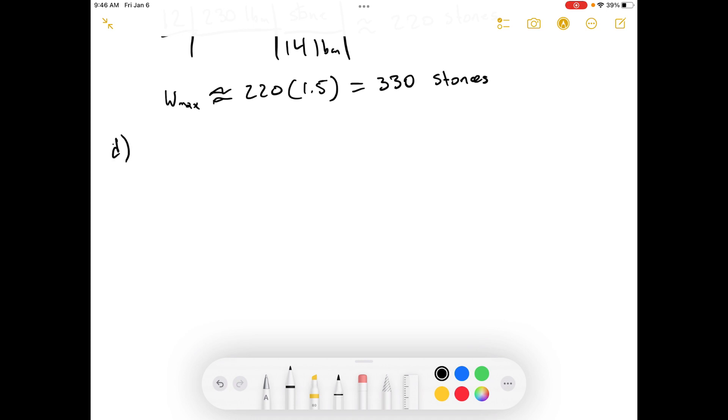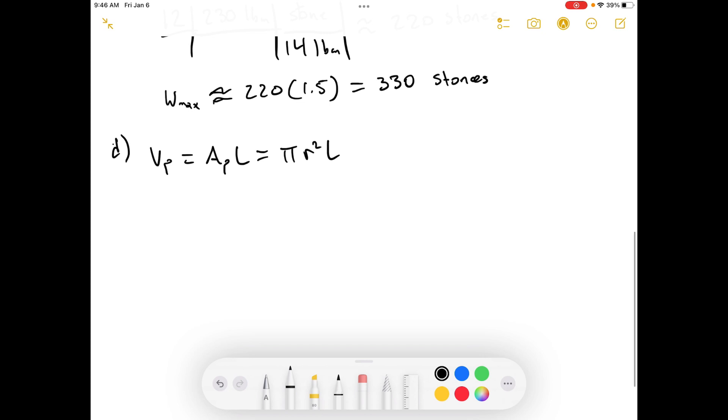Part D: An oil pipeline across Alaska is 4.5 feet in diameter and 800 miles long. How many barrels of oil are required to fill the pipeline? The volume of the pipe is equal to the cross-sectional area of the pipe times the length of the pipe. And the cross-sectional area of the pipe, assume it's a circle, so pi r squared times L.